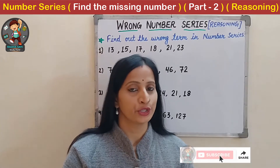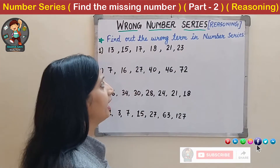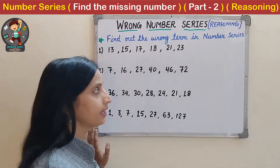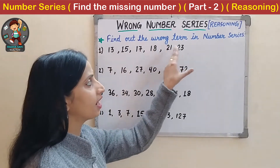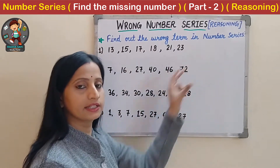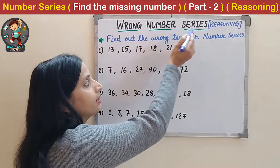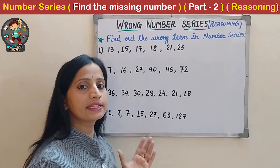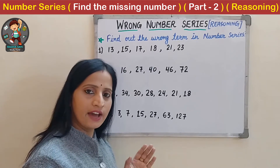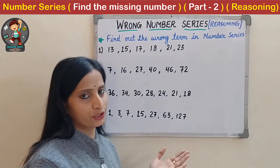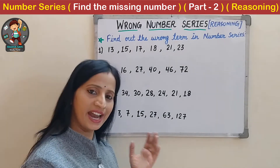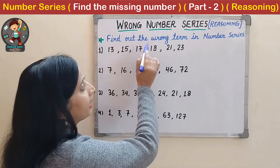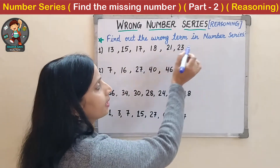Hello friends, welcome back. So today I am here to explain about the second most important concept of number series - that is finding out the wrong term in number series. This is also known as wrong number series. The first concept was finding the missing term in the number series, which I have already explained in my previous video. Please go through that video also. Now in this video we will learn how to find out the wrong term in number series.